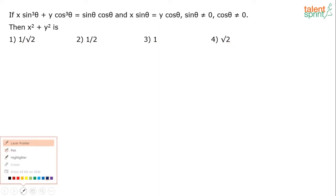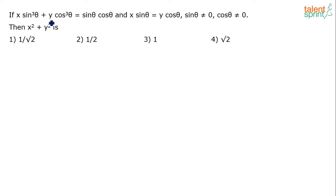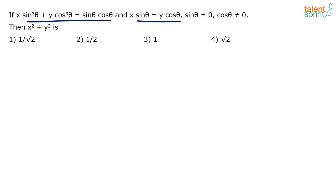Let's solve this. Two conditions are given: Condition 1 — x·sin³θ + y·cos³θ = sinθ·cosθ. Condition 2 — x·sinθ = y·cosθ. Additionally, sinθ ≠ 0 and cosθ ≠ 0.